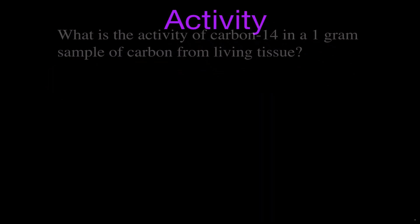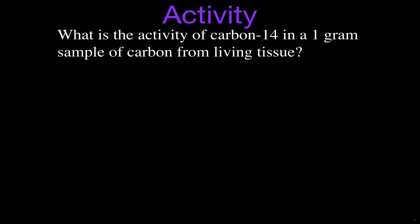In this problem, we're going to be talking about activity. In this video, we're going to calculate what is the activity of carbon-14 — the radioactive isotope of carbon that is used for radiocarbon dating when you want to figure out how old a piece of biological material is, such as a tree, a person, or an animal. We're going to figure out what is the activity of carbon-14 in a one-gram sample of carbon from living tissue.